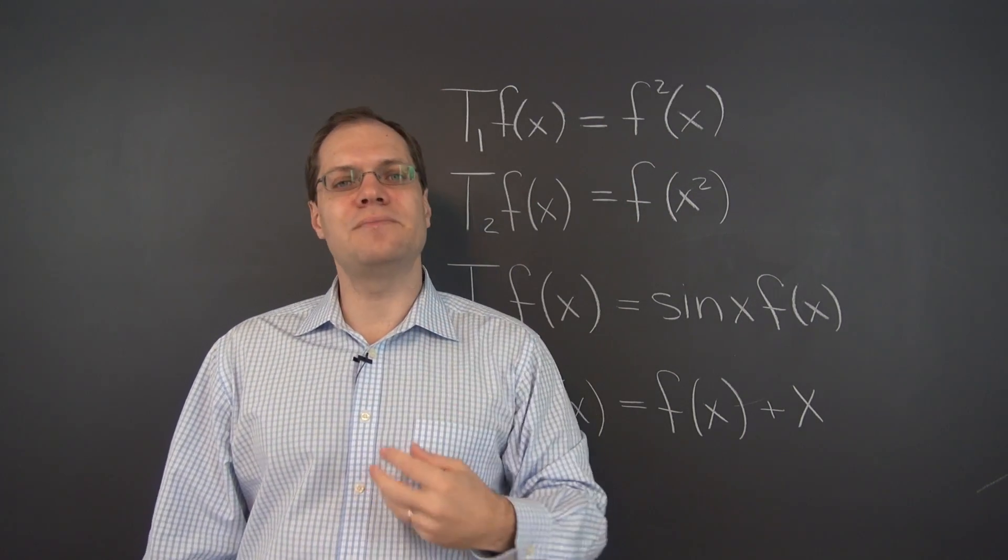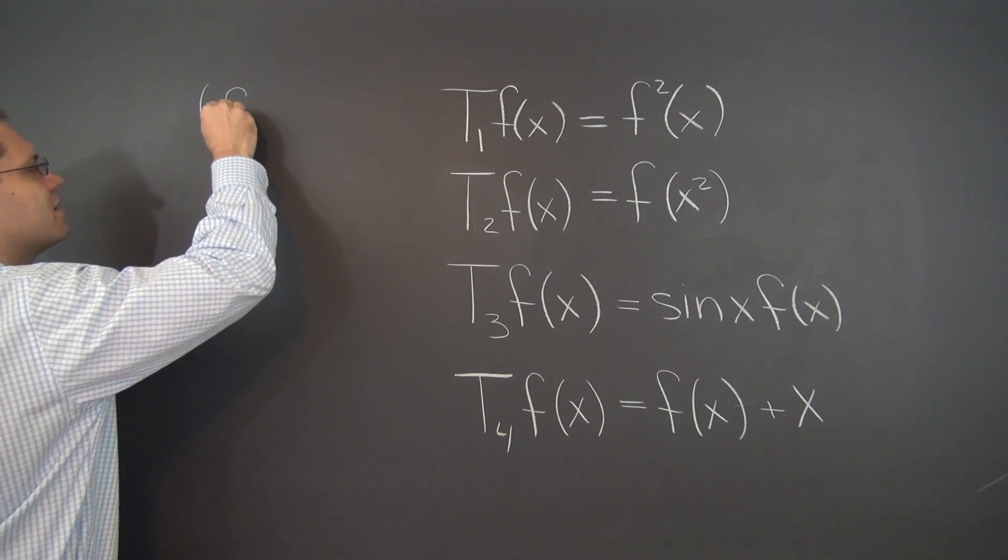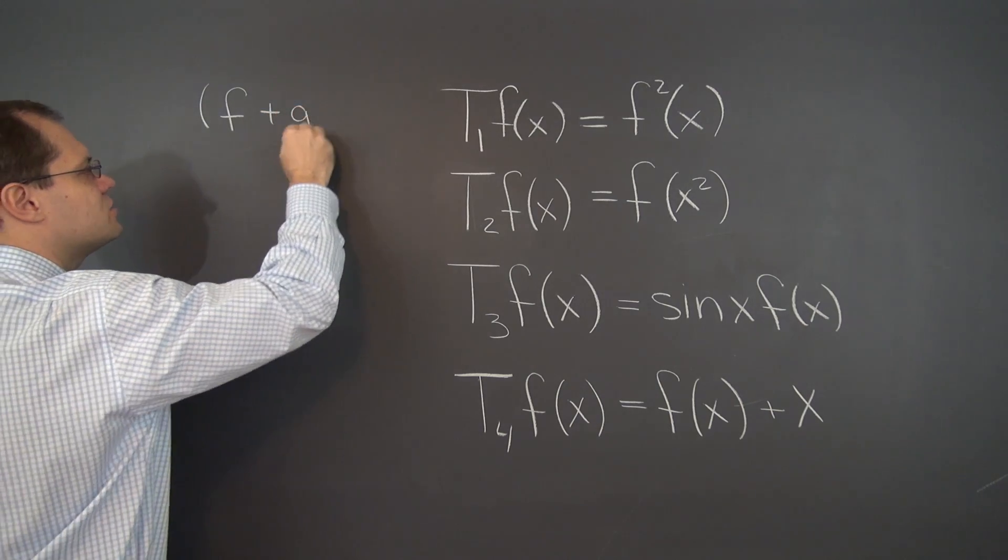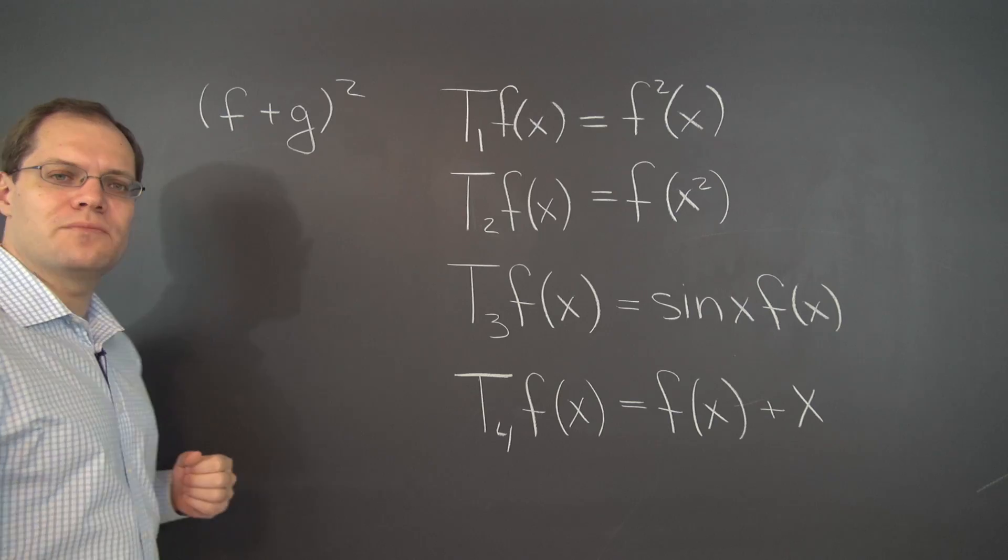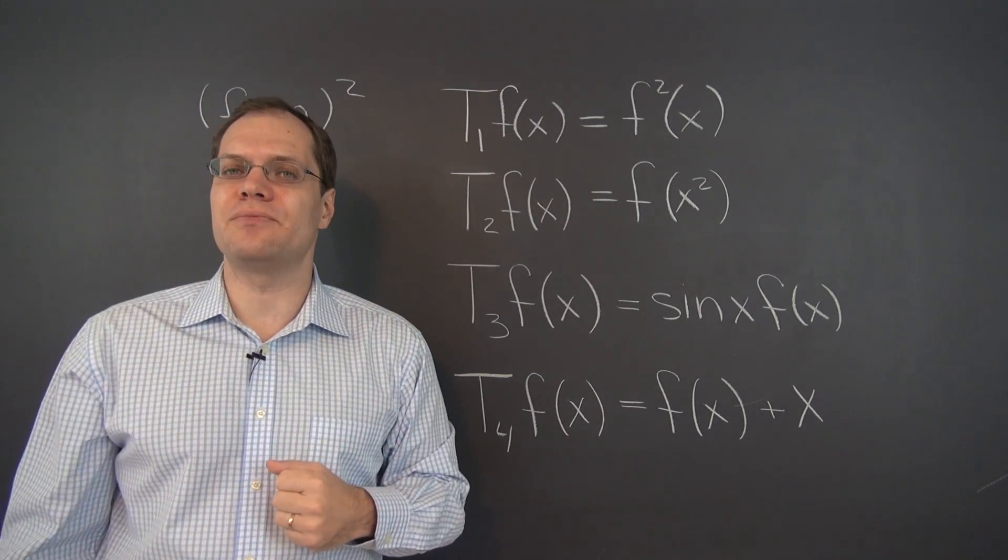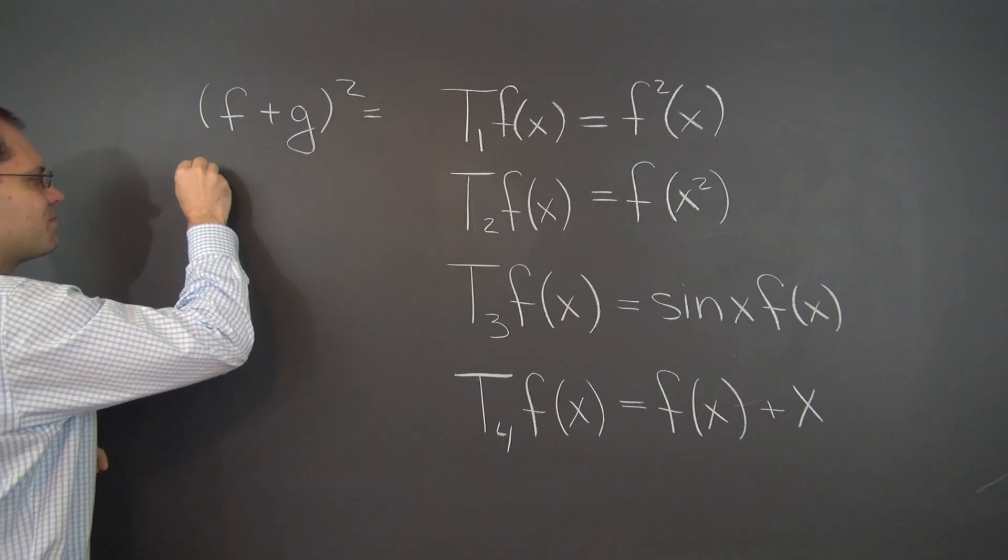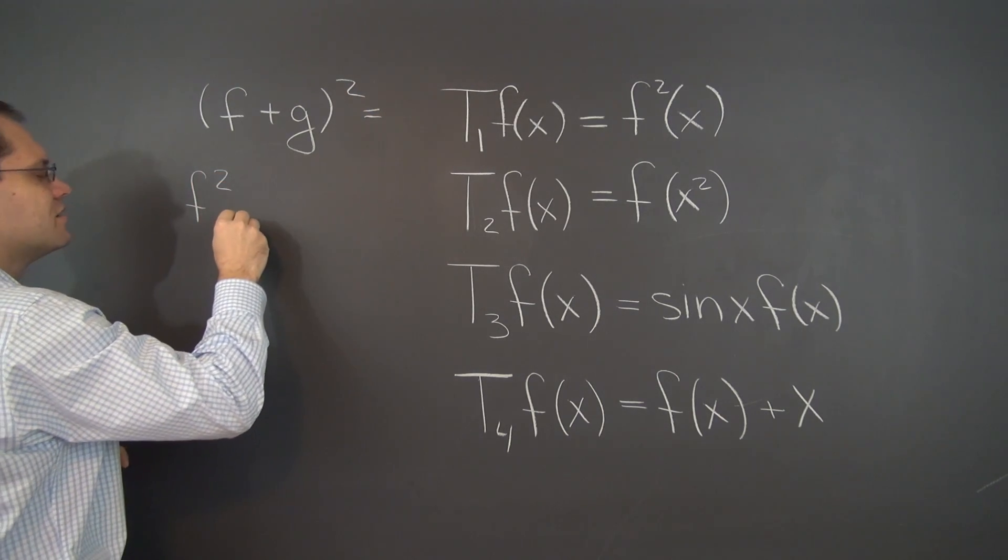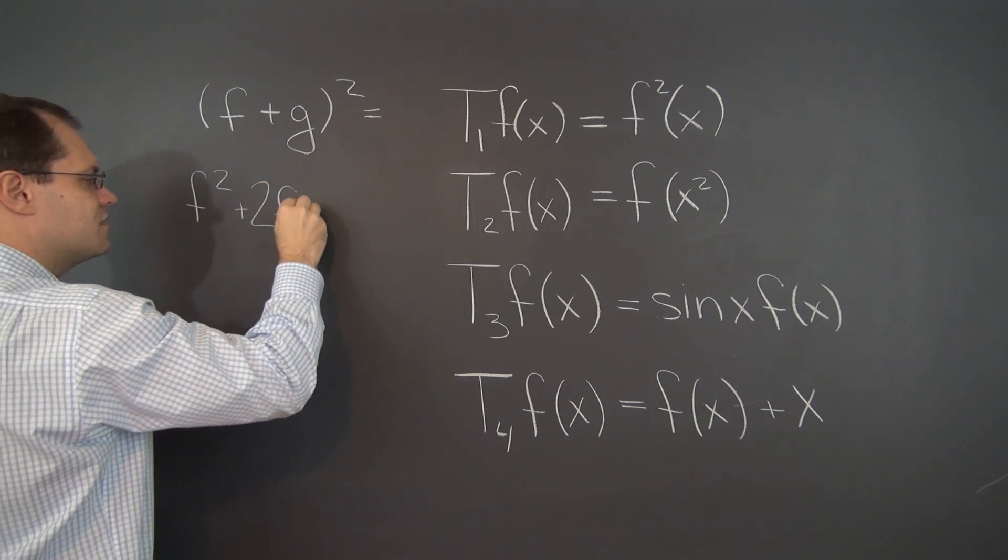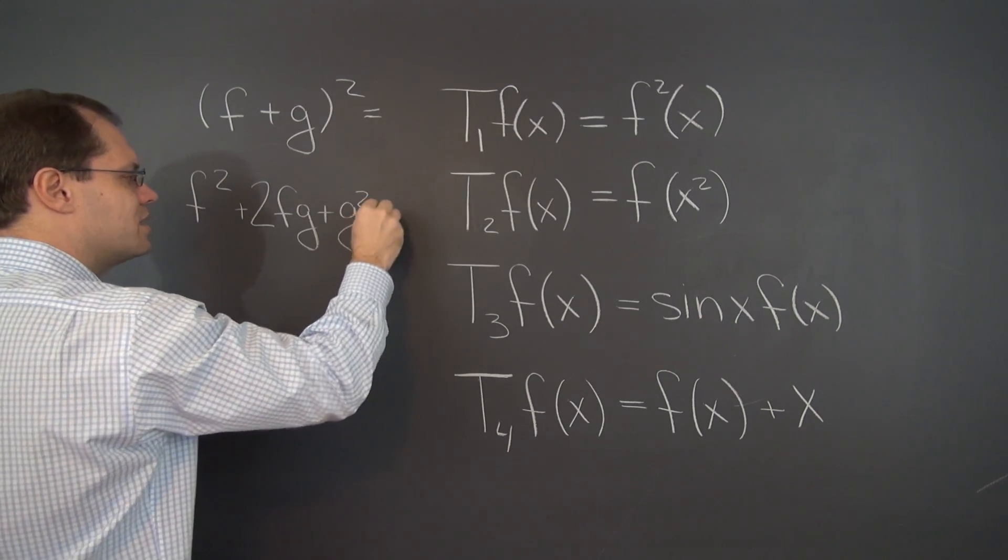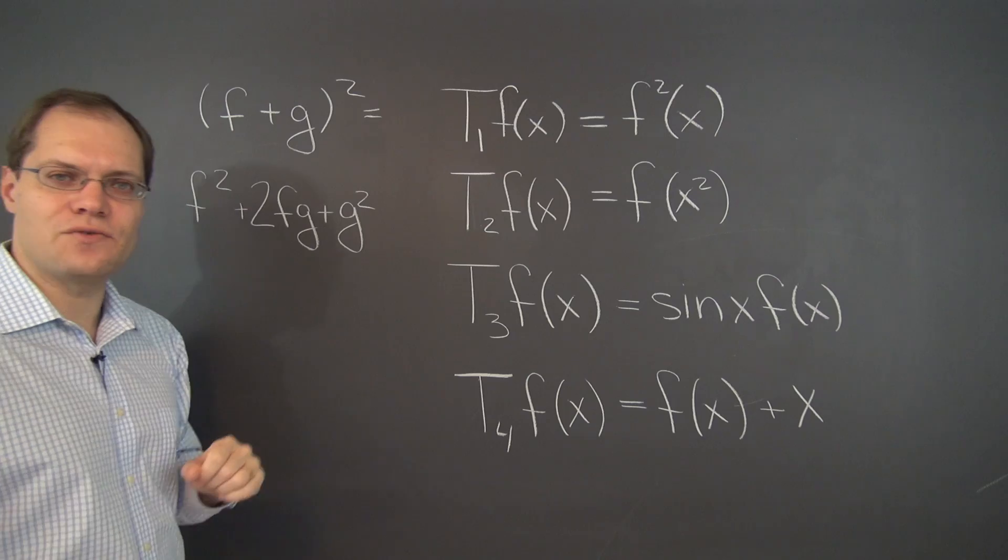And the sum test would also fail. Let's compare adding two functions first and then transforming versus transforming individual functions and then adding up the results. Well, if we add them first and then transform them, what we would get is, of course, by the quadratic expansion formula, f squared plus 2fg plus g squared. That's the result of adding the functions first and then transforming them.